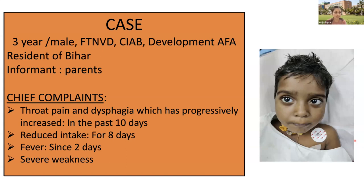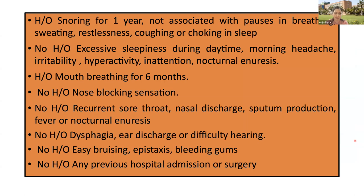My case is a three-year-old male who was a full-term normal vaginal delivery, cried immediately at birth, and was developmentally appropriate. He was a resident from Bihar and the informant is the patient's parents. He presented with chief complaints of throat pain and dysphagia which had progressively increased over the past 10 days. There was history of reduced oral intake for eight days, fever for two days, and severe weakness. His parents gave history that the child snores at night for one year, not associated with any pauses in breathing, sweating, restlessness, coughing, or choking in sleep.